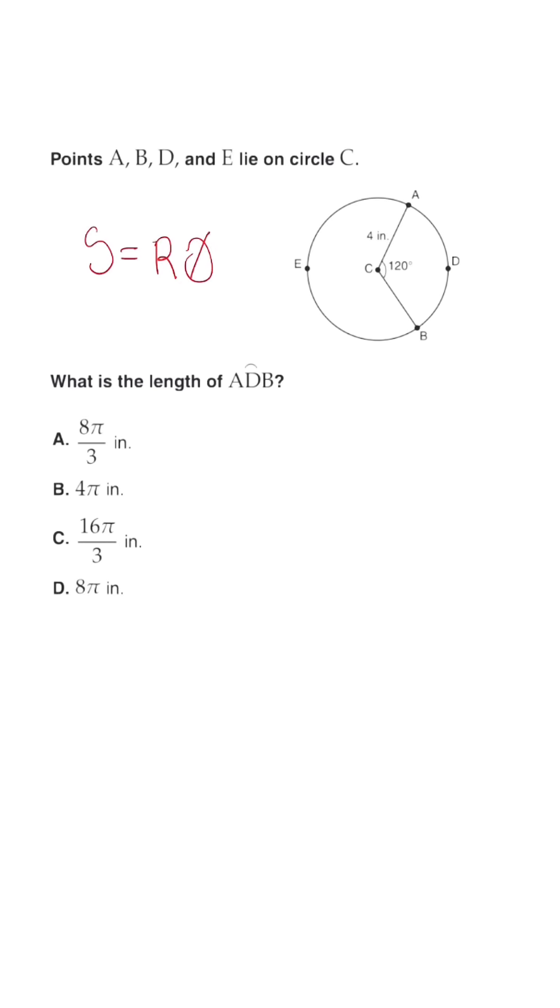We have the radius, which is 4, but theta we don't have yet because this degree measure is in degrees, and we want it to actually be in radians so that we can use this formula. So we're going to take 120 and convert it to radians by multiplying by pi over 180.